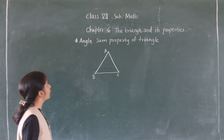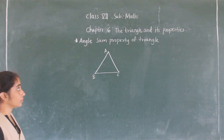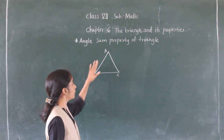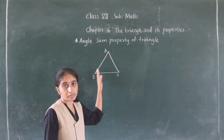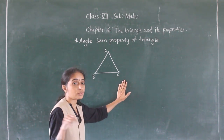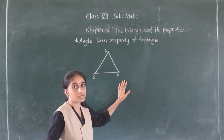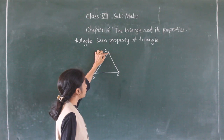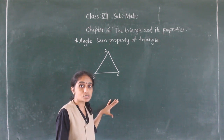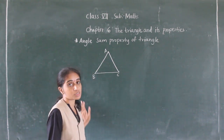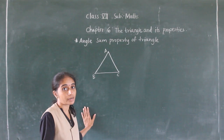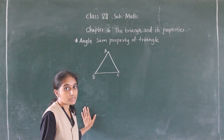Hello everyone, let's learn today the angle sum property of triangle. This is triangle ABC. You can draw a triangle in your notebook and measure the angles — measure angle A, angle B, and angle C using a protractor. Then do the sum of all the angles and you will get 180 degrees.